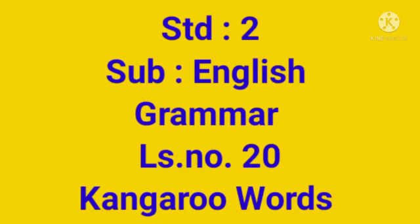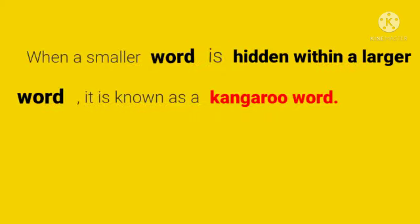Standard Second Subject English Grammar Lesson No. 20: Kangaroo Words. When a smaller word is hidden within a larger word, it is known as a kangaroo word.